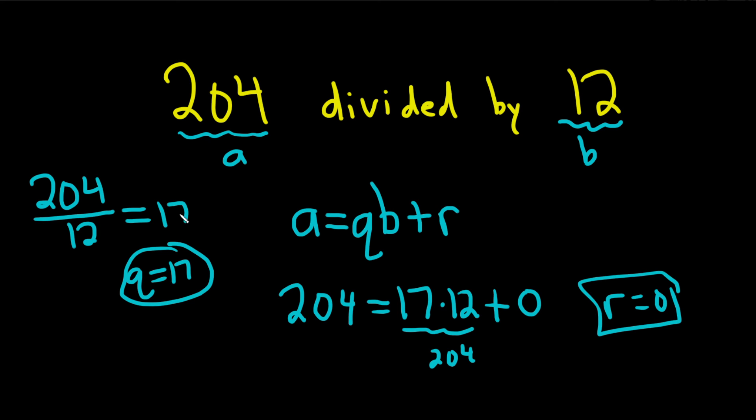So whenever you get a whole number like this, you're pretty much done, right? That's your quotient, and the remainder is zero.